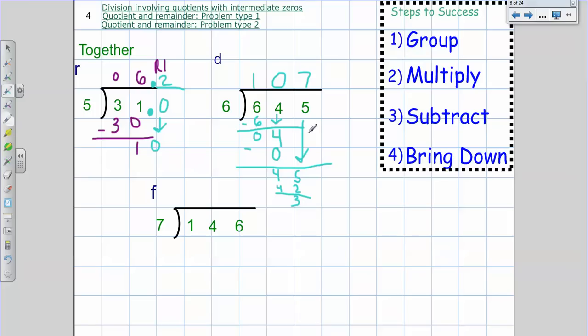So now I'm subtracting 4. Bring down my 5. How many times does 6 go into 45? 6 times 7 is 42. So this is when I could say I have a remainder of 3, because I don't, I'm not ending. I've used up all of my digits and I have 3 left over. So again, instead of saying that I have 3 left over, I'm going to make my answer into a decimal.